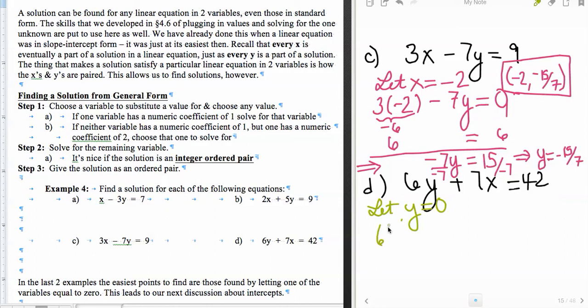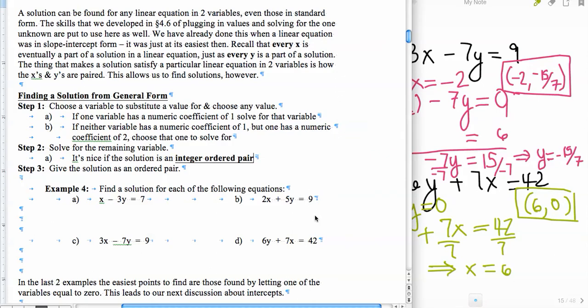So plugging that in I have 6 times 0 plus 7 times x which is equal to 42. And now I multiply by the reciprocal of the 7 on both sides and that's going to give me that x is equal to 6. And so my ordered pair solution is x is equal to 6 and y is equal to 0. And we do notice that's the x-intercept, right? The x is here and the y is 0 so we know it's an x-intercept. We can check that 7 times 6 is 42 plus 6 times 0 which is 0. 42 plus 0 is 42 and 42 does indeed equal 42. And so that was a very nice solution.